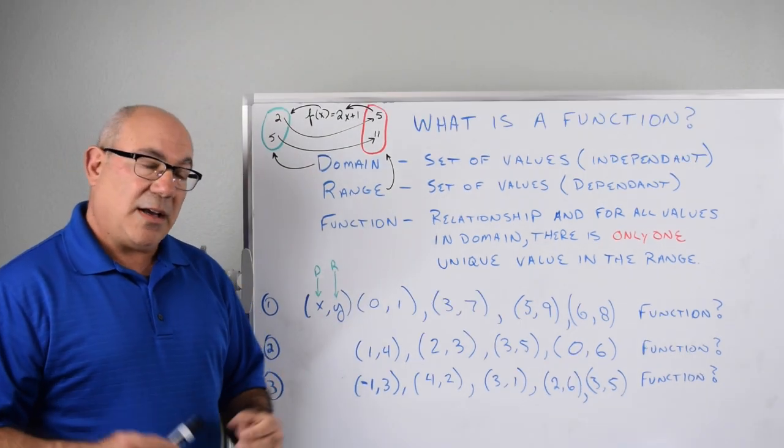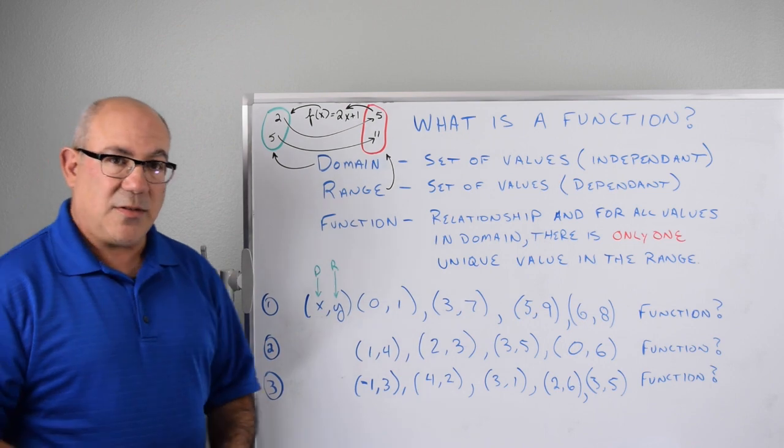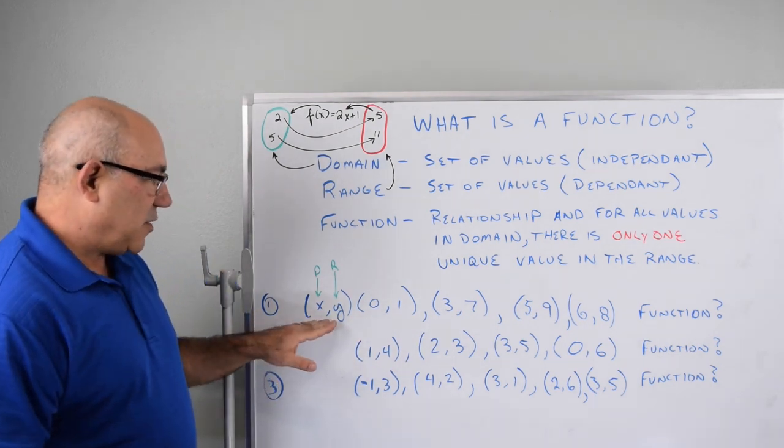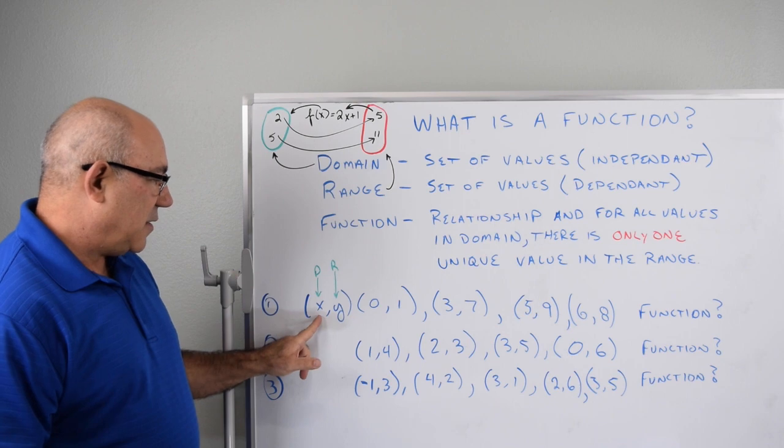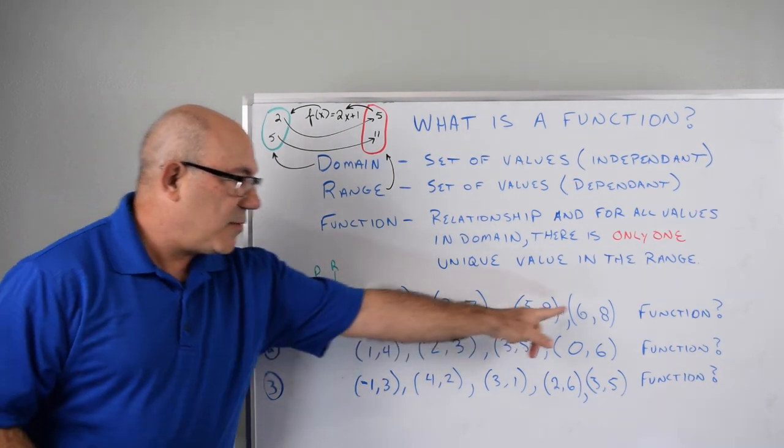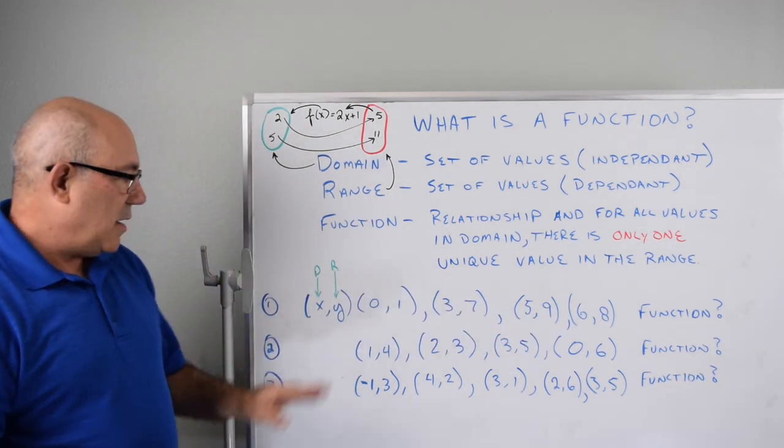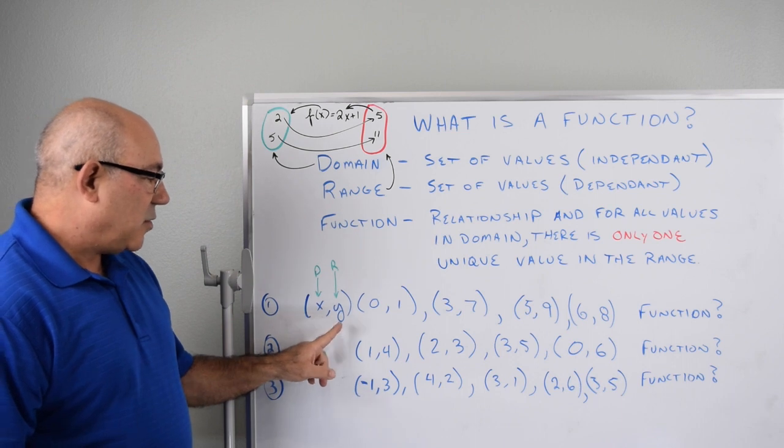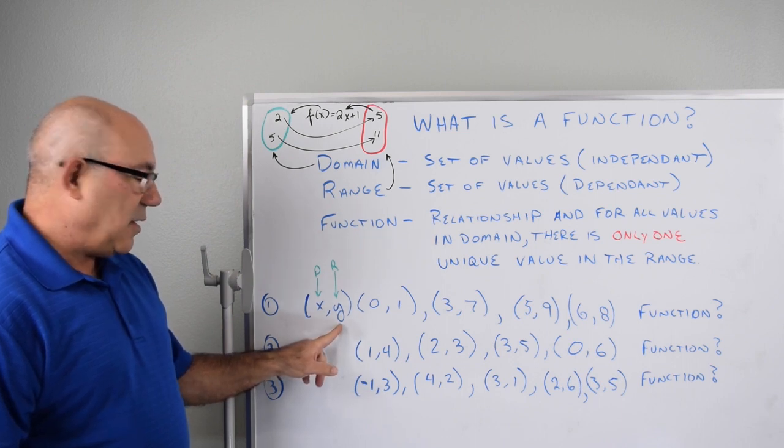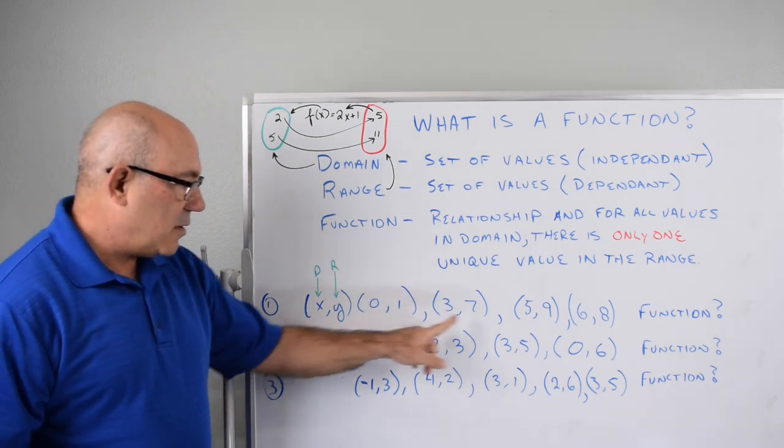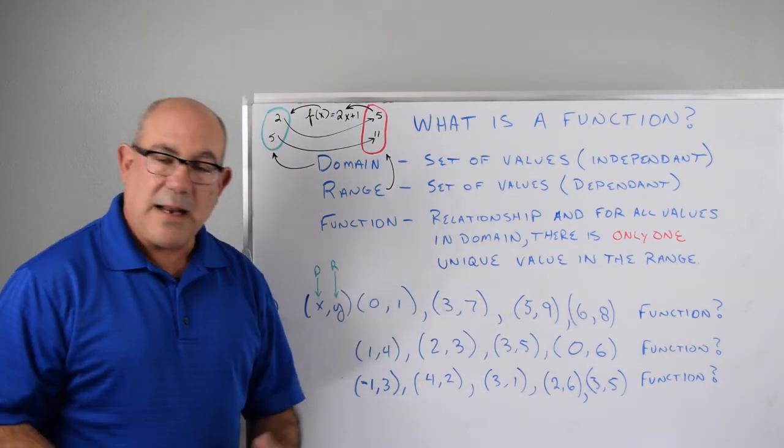Okay. So if you've taken a chance, let's give you the answers for these three. So if we look at the first set of values, we can see that the domain, there's four different sets of values in that domain. And for those four sets of values, we do have only a unique value of y: 1, 7, 9, 8. Never repeats.